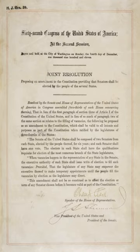It also alters the procedure for filling vacancies in the Senate, allowing for state legislatures to permit their governors to make temporary appointments until a special election can be held. The amendment was proposed by the 62nd Congress in 1912 and became part of the Constitution on April 8, 1913, on ratification by three-fourths of the state legislatures. Sitting Senators were not affected by the amendment's provisions until their existing terms expired, so the amendment took six years to fully implement.